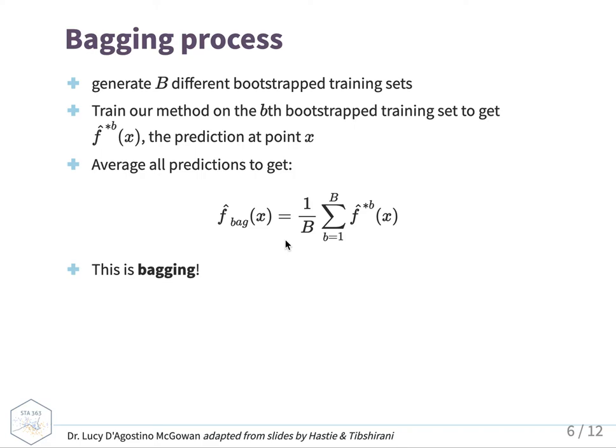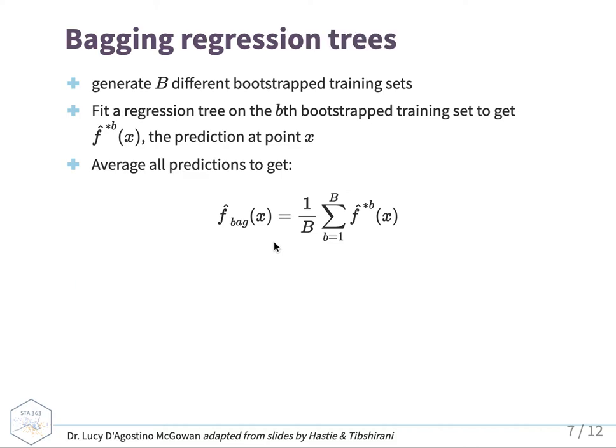Bagging takes your original training data, resamples from it, and each time creates a new bootstrapped training set. We do that B times, then fit our model — training our method on each of those bootstrap training sets — and get the predicted values on each of those B training sets. Then we average those predictions to end up with the bagged prediction. For regression trees specifically, you generate B different bootstrap training sets, fit a regression tree on each to get the prediction at point X, and average all the predictions.